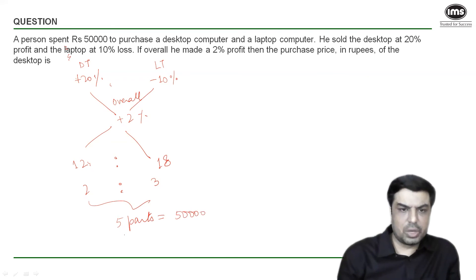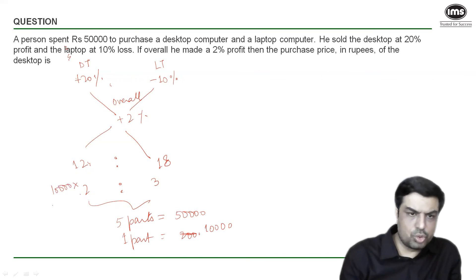The total purchase price was 50,000, which means 5 parts value is 50,000, so one part value will be 50,000 by 5, which is 10,000. And the desktop price is 2 parts, so it will be 10,000 into 2, which is 20,000, and 20,000 is the required answer.